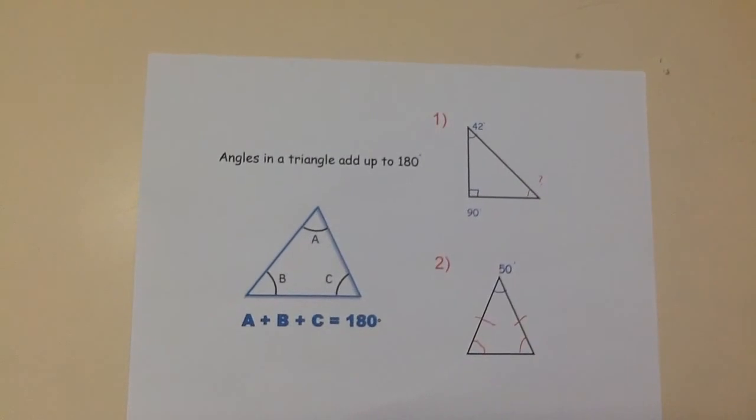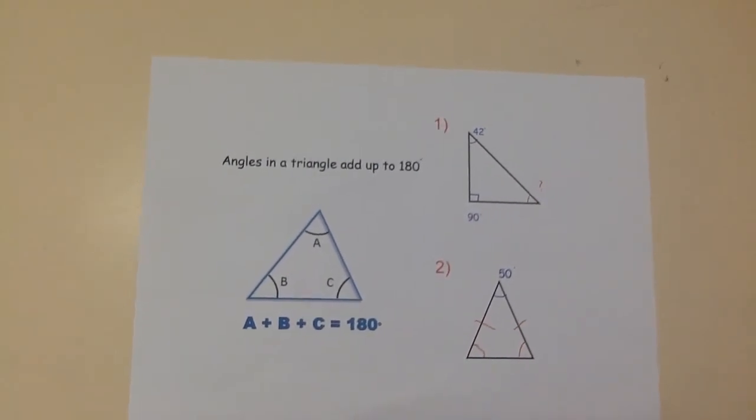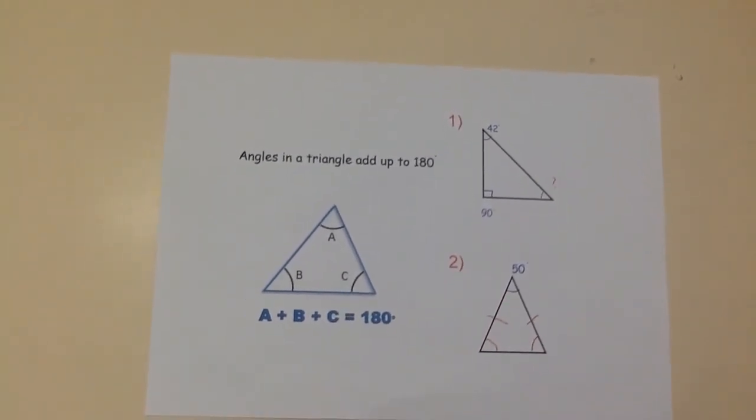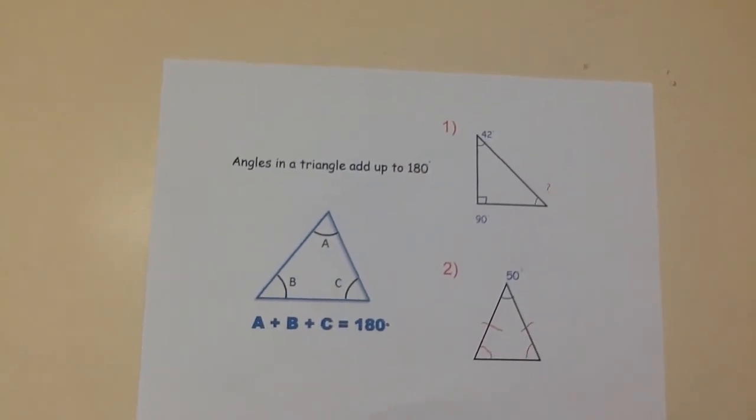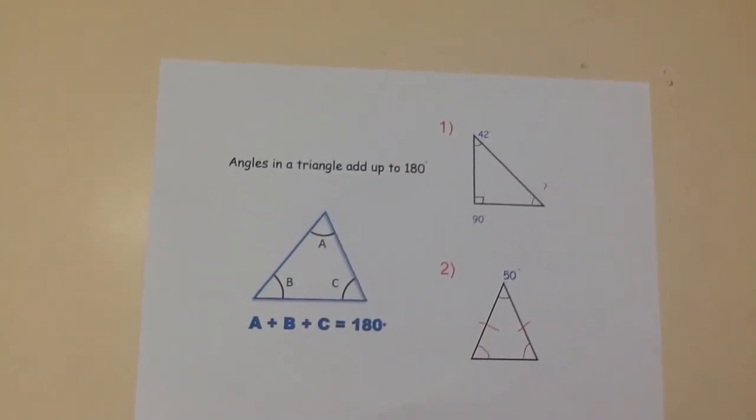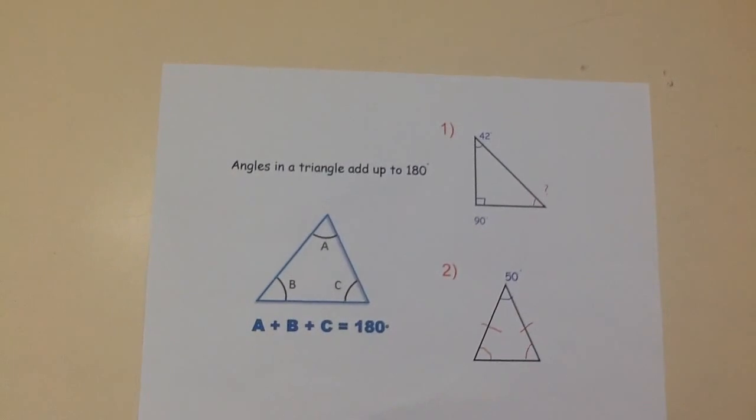which we then subtract from 180 to tell us the missing angle is 48 degrees. For question 2, we only know one angle, so we subtract the 50 from 180, which leaves us with 130, which must be split evenly between the two remaining angles, so each angle would be 65 degrees.